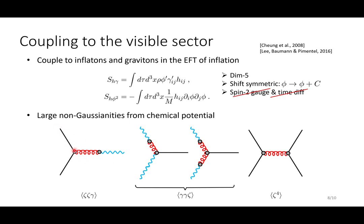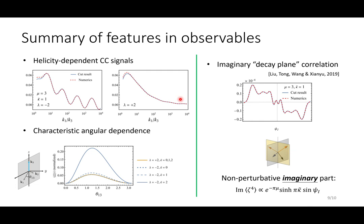After one turns on such interactions, one can easily draw diagrams that contribute at tree level to large non-Gaussianities. For example, the curvature tensor correlator will receive a contribution from this diagram. The blue line is the graviton, the red line is the massive spin-2 particles. And you can also look at this for the four-point function of the curvature perturbations.